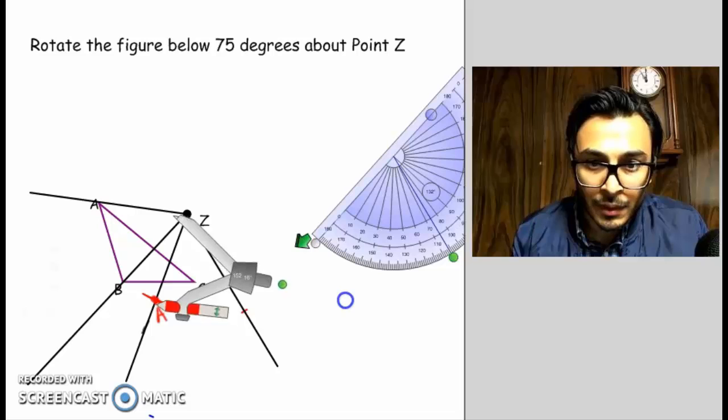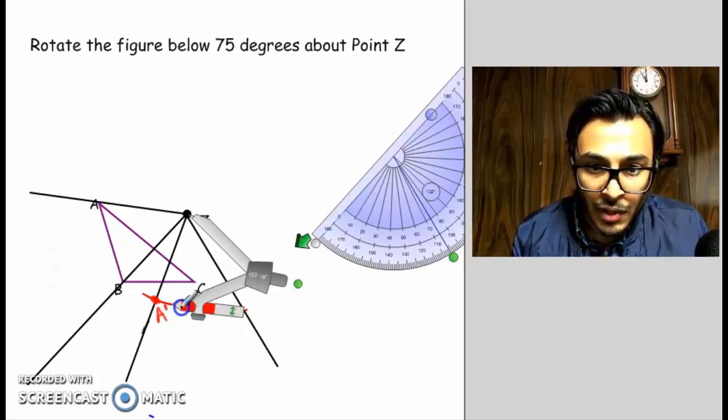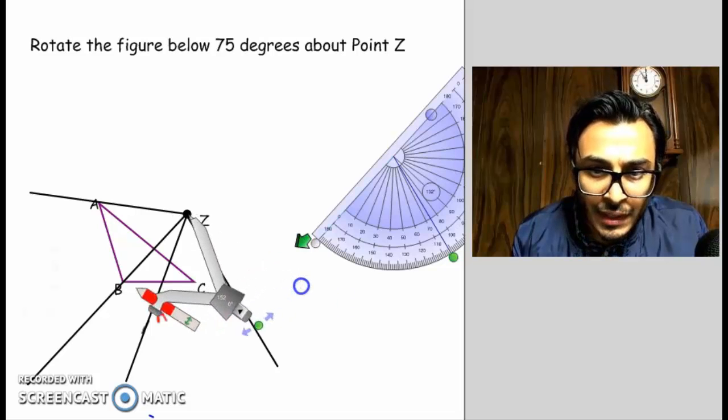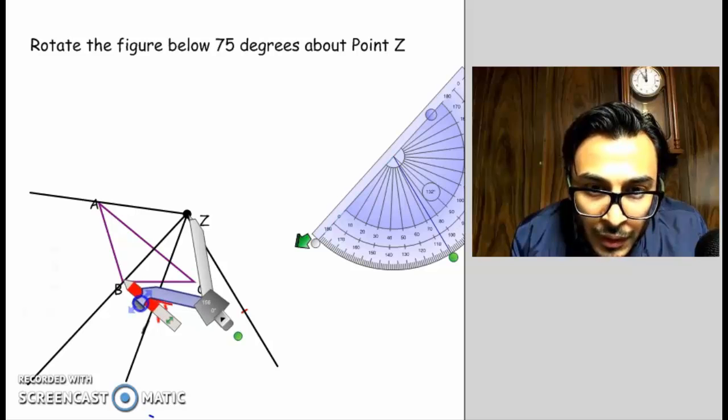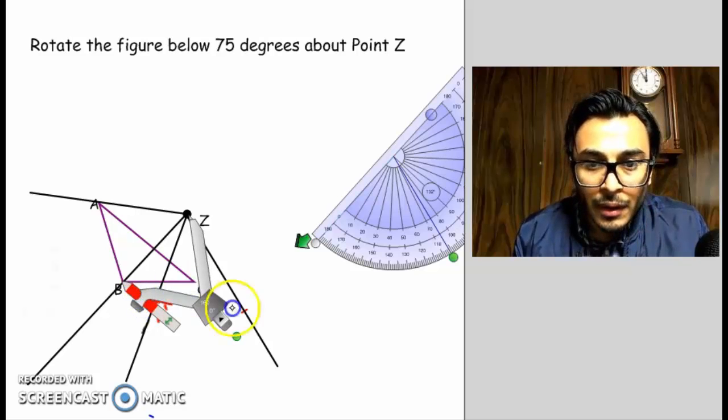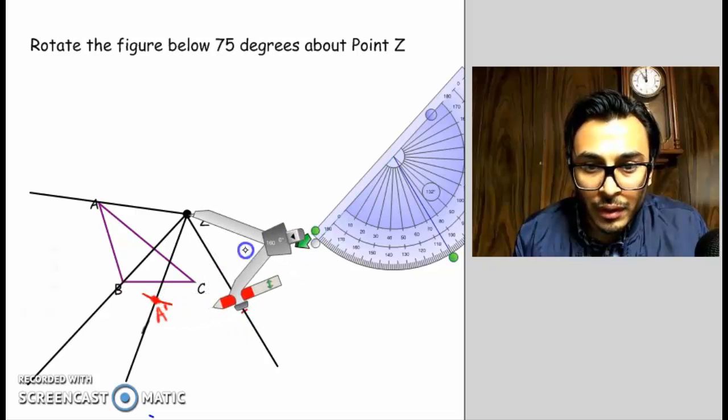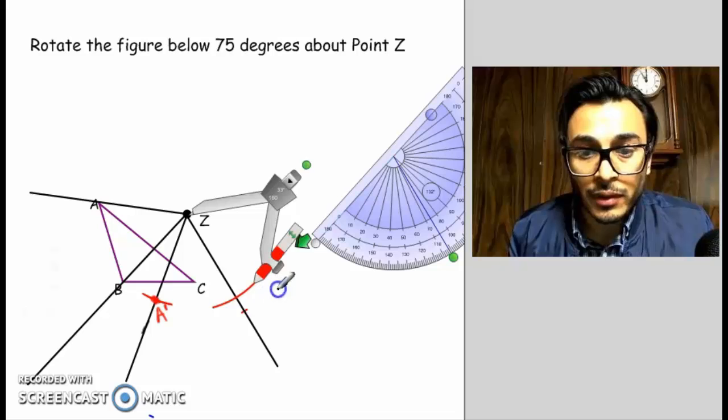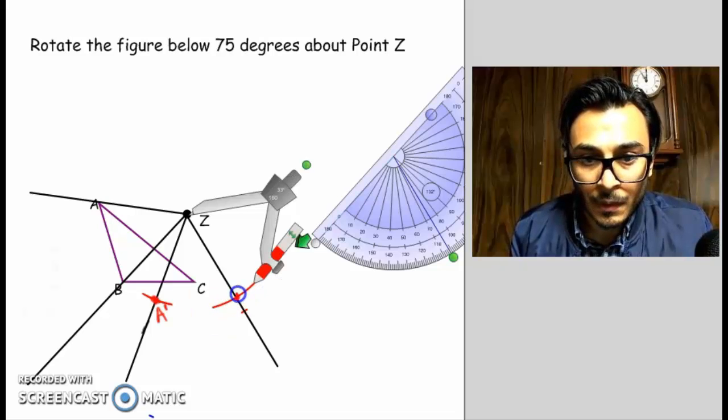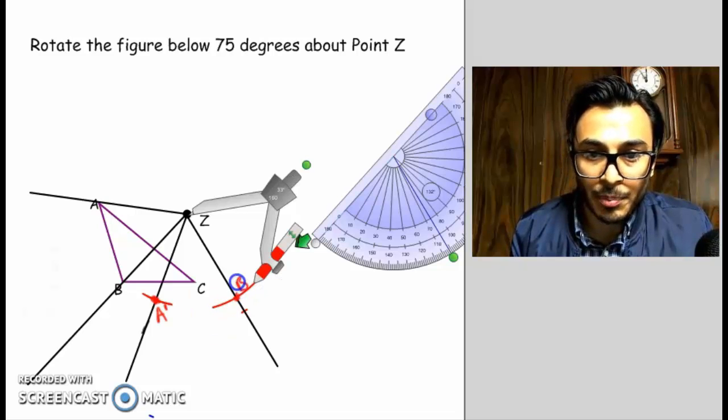Take our compass and measure from point Z to point B, that original point B where it was. So I have to adjust my compass a little bit. There it is. Right there. And then I'm going to swing an arc so that I intersect that line. There's the intersection. That's my point B prime.